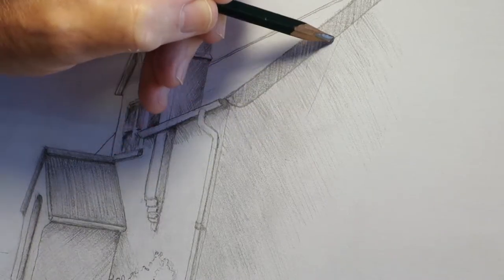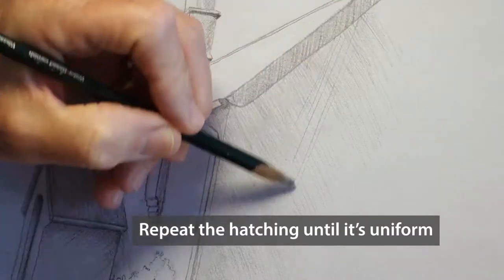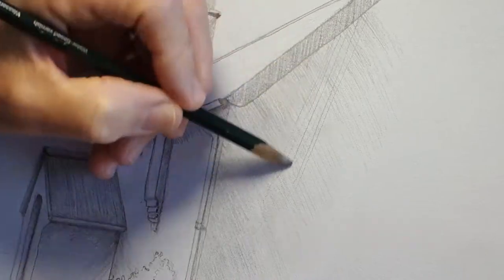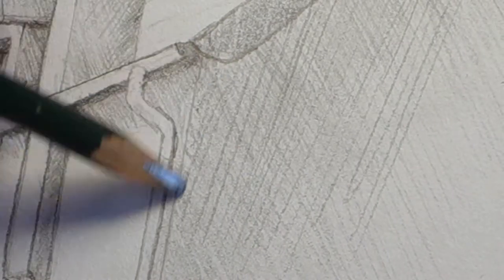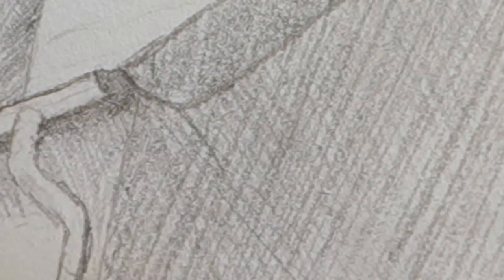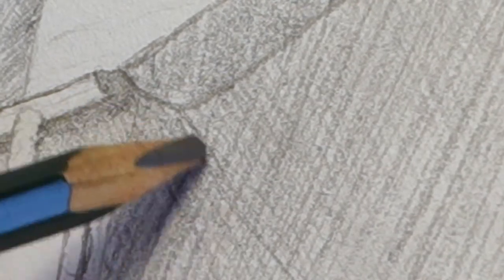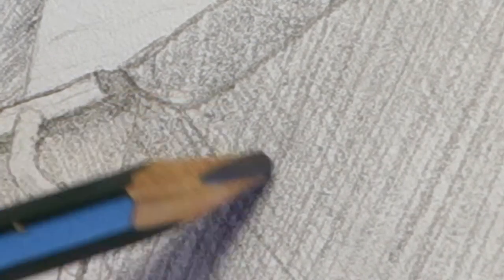You can cross hatch. The strokes go in the opposite direction to your first ones. And again you just keep filling in between them until it's the smoothness that you want for your drawing. It's up to you how rough or how dainty your shading is.